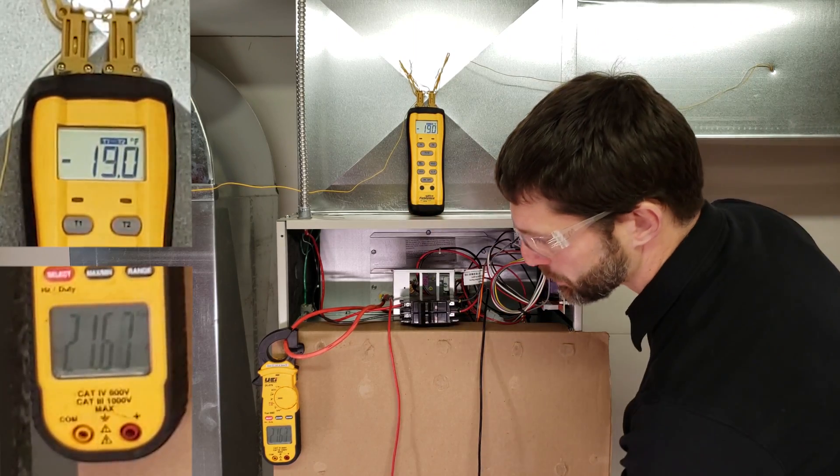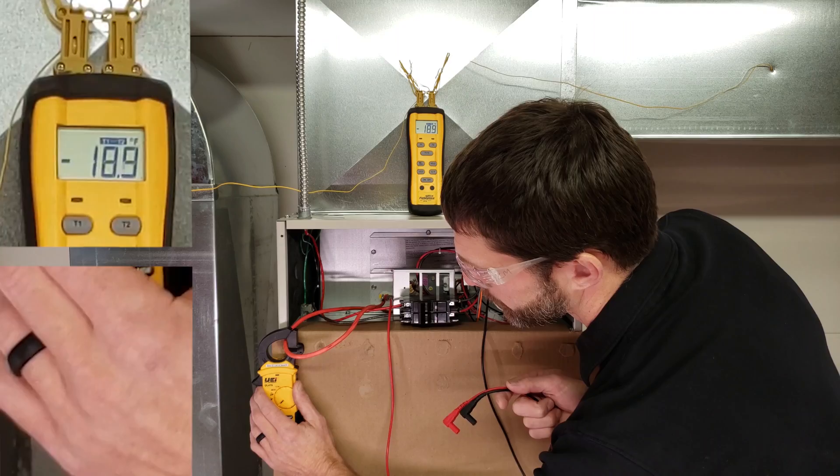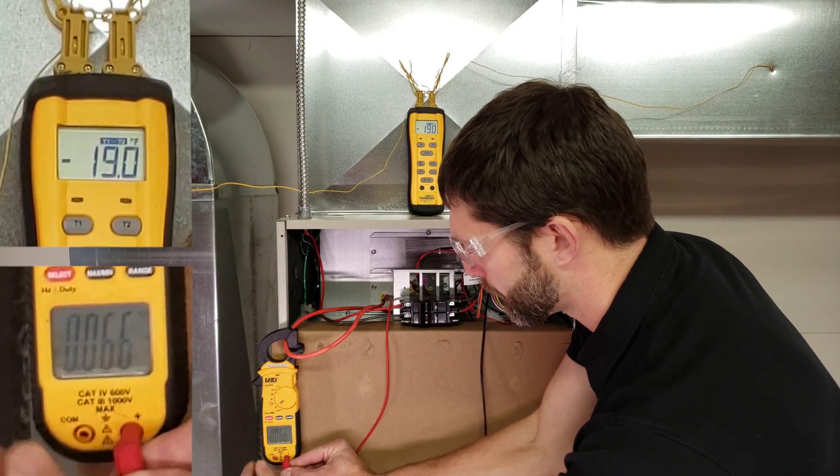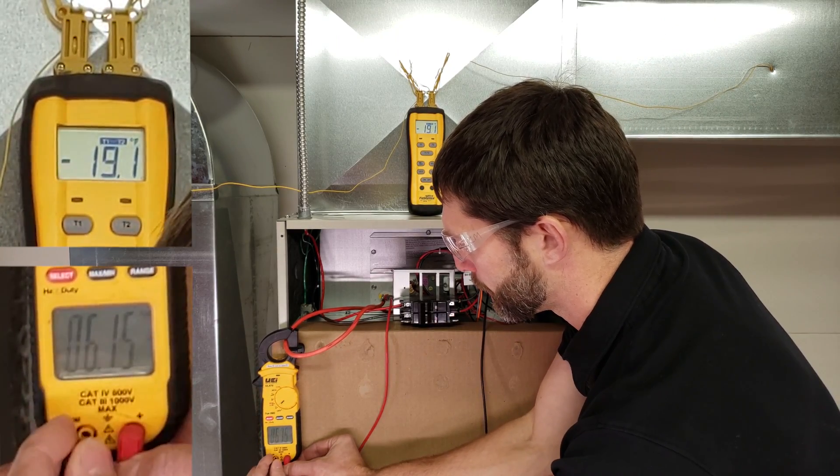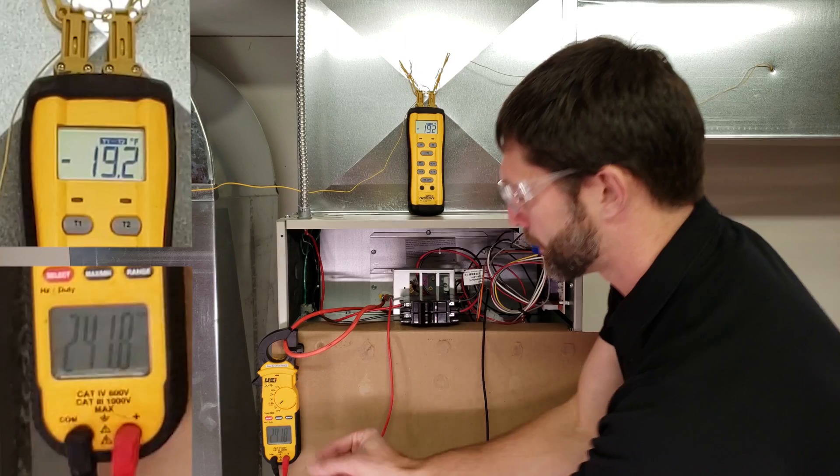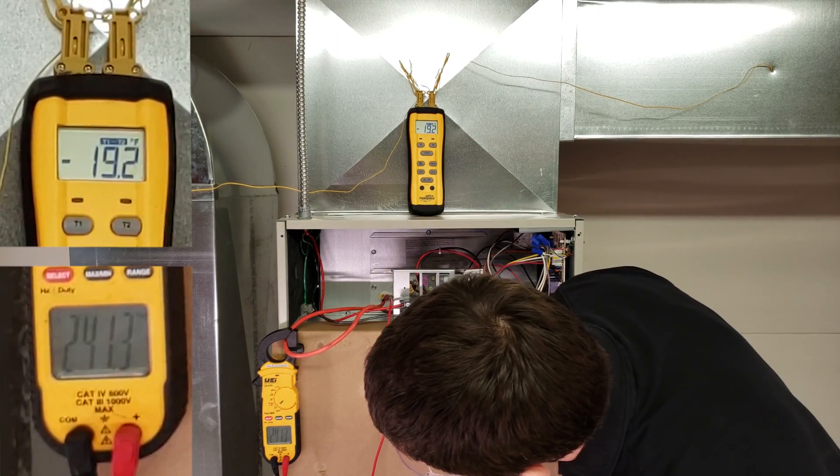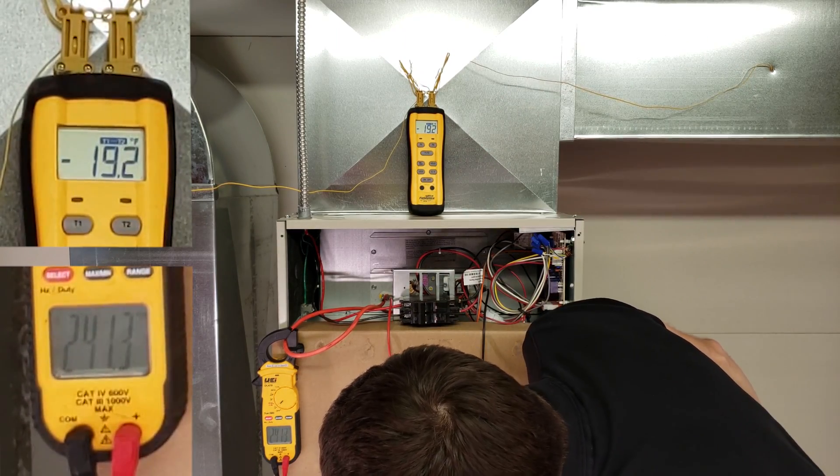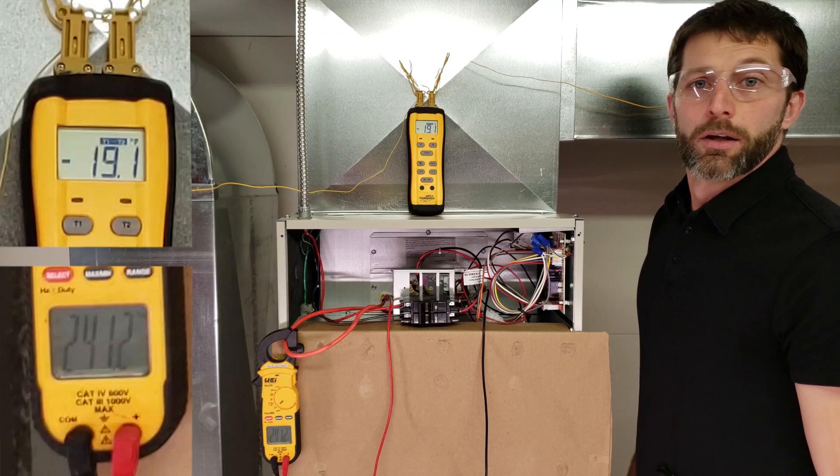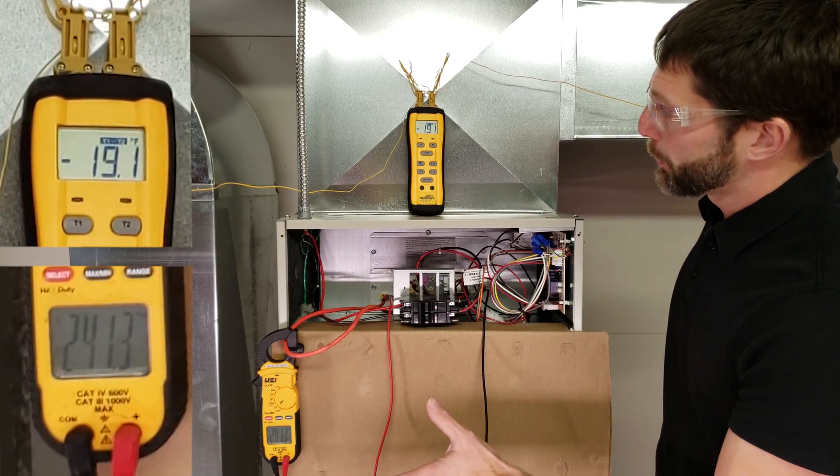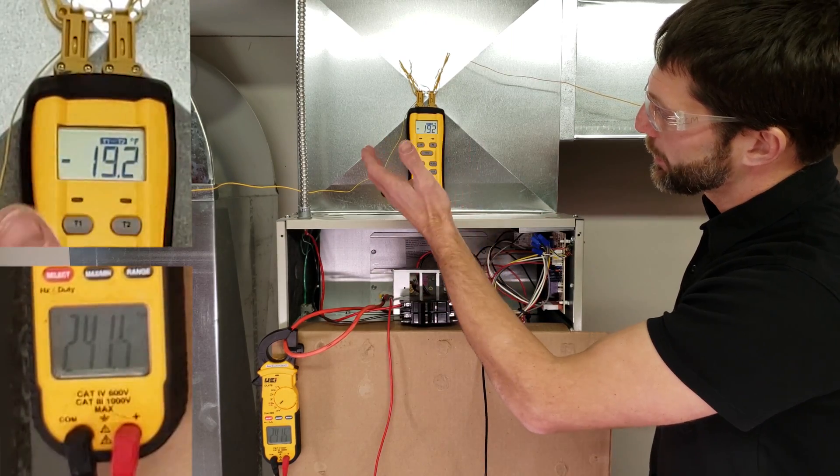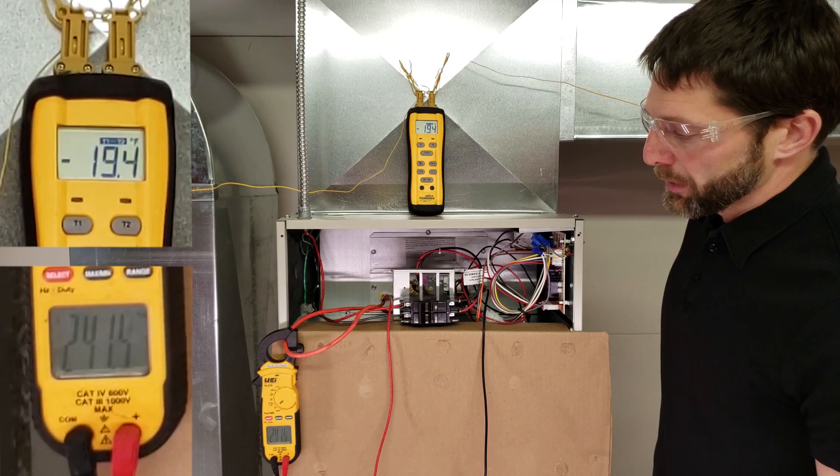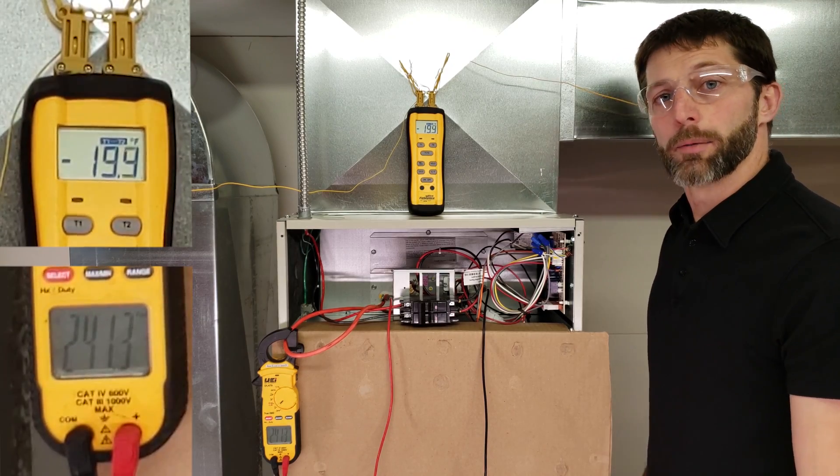And let's go ahead and check our voltage. And our voltage is 241.3. So we have our three measurements. This is right about 19.2 degrees. So we have our three measurements, and let's go ahead and input them into our formula.